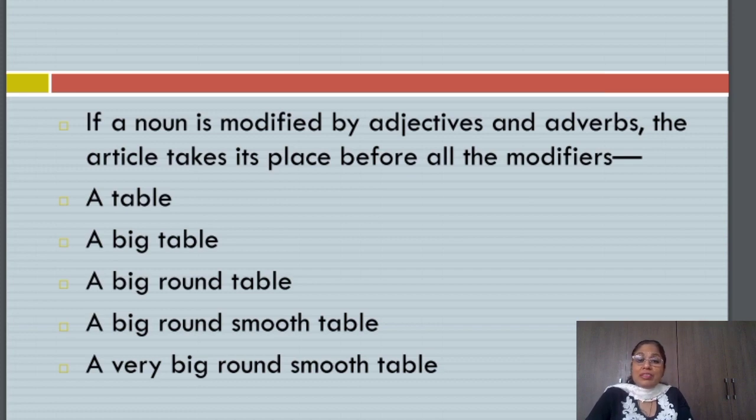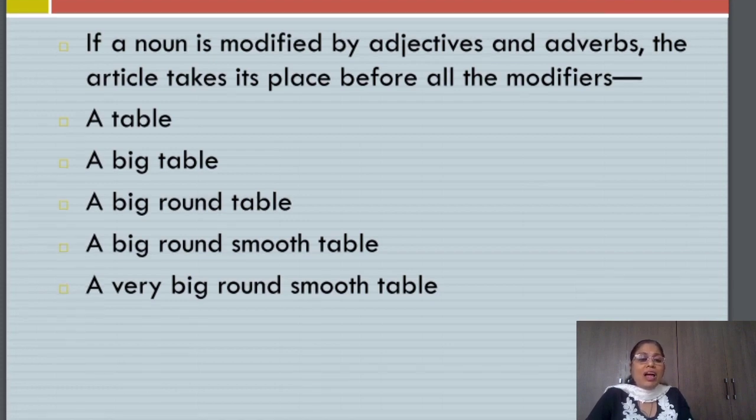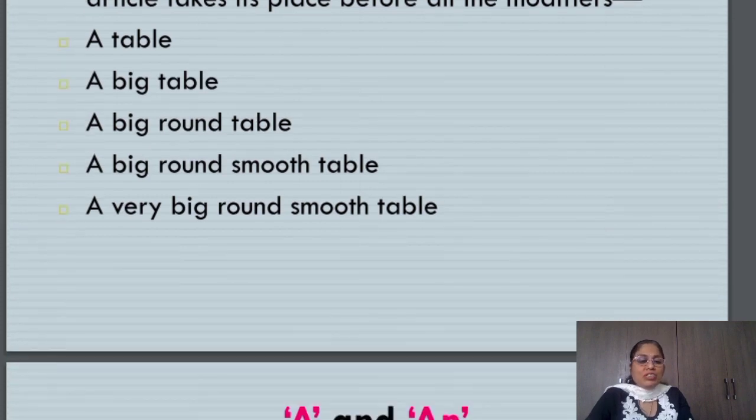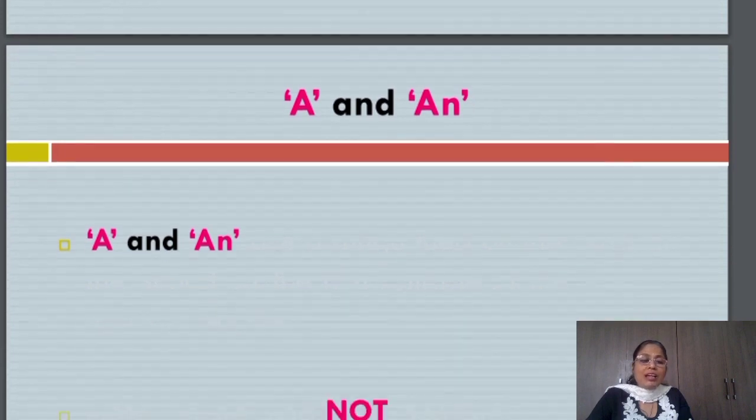For example, I can say a table. But if it is a big one, I say a big table. If it is big as well as round, I say a big round table. If it is also smooth, I say a big round smooth table. But if the table is very big, round and smooth, then the phrase is a very big, round and smooth table.